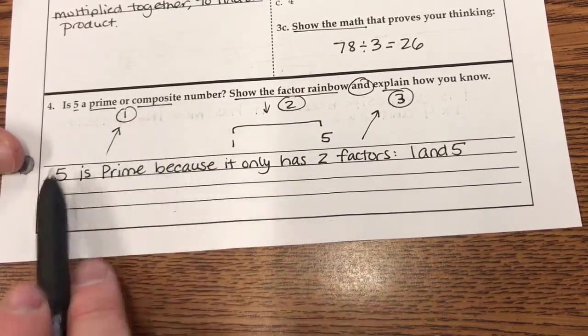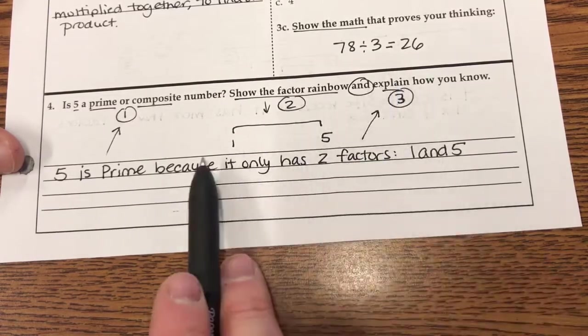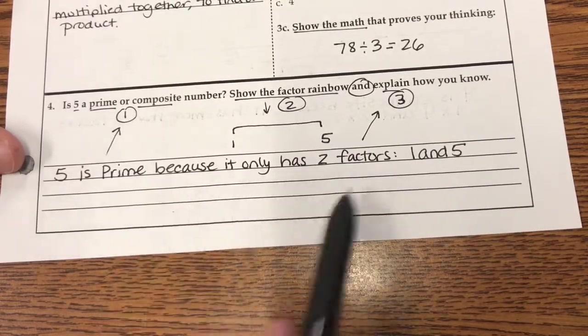Then I answered, is 5 prime or composite? 5 is prime. And now the because is the explain. Because it only has two factors, 1 and 5. Okay? Some of you add some other stuff, and that's fine, too.